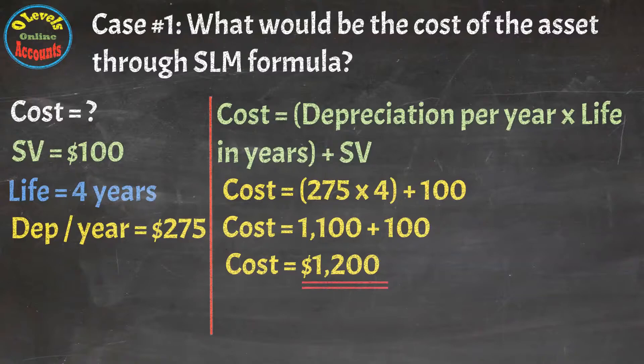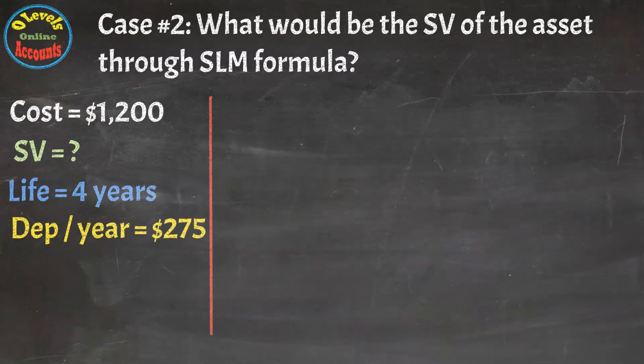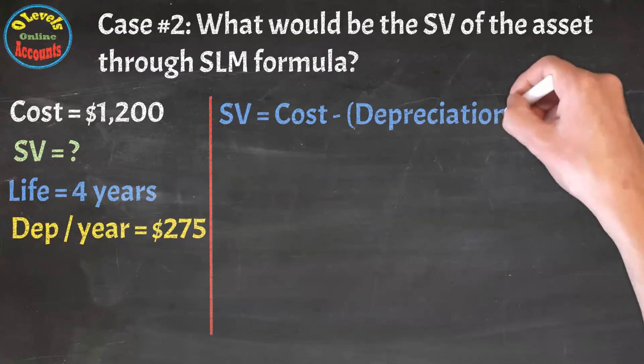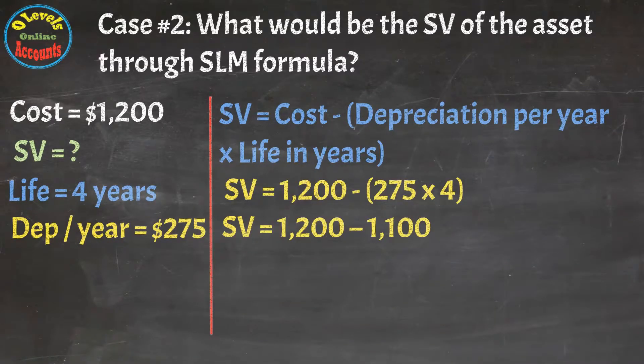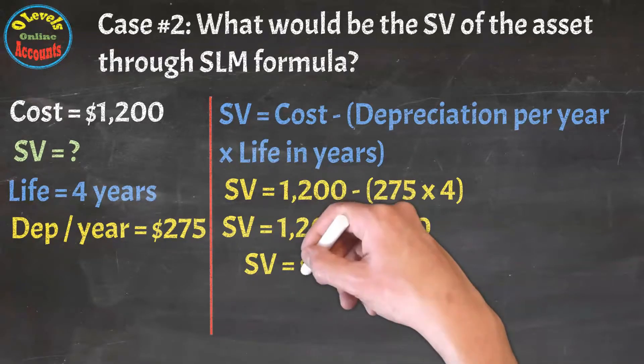Let's move towards the next case. In case number two, we have to find out the scrap value of the asset through given data. In this case, we will change the formula settings to calculate the scrap value of the asset. The new shape would be scrap value equals depreciation multiply by life and deduct from cost. By putting all corresponding values, we will get the scrap value of the asset is $100.